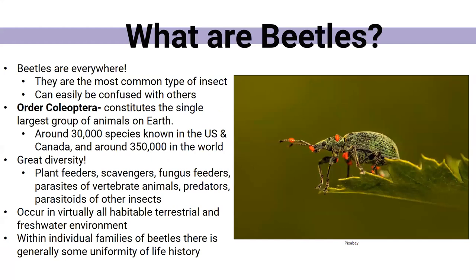Let's talk about just what beetles are. If you are a bug nerd or just like to observe and are a naturalist, beetles are everywhere. They are the most common type of insect that you're going to find. There are about 350,000 species in the world — this is a hard number to pin down; I saw 350, 360, 400. There's always new species discovered. Things are constantly changing as far as this order of beetles, which is called Coleoptera. This is the single largest group of animals on earth.